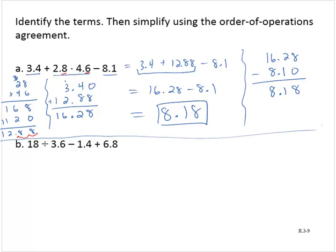Exercise B, I have 18 divided by 3.6, that's a term. 1.4 and 6.8 are separate terms. So using the order of operations agreement, let's take care of that division first.